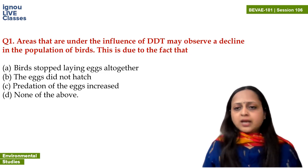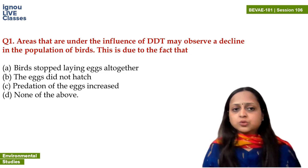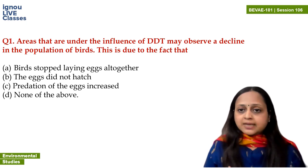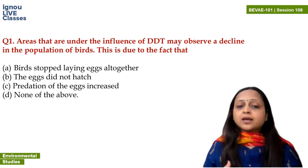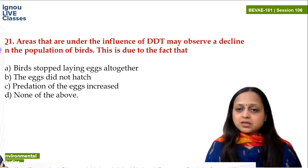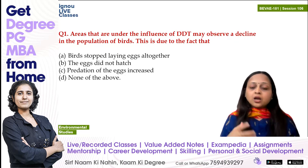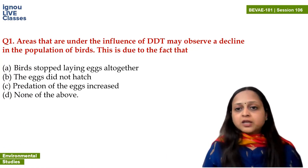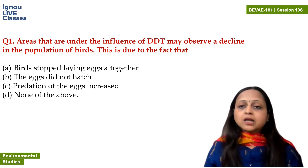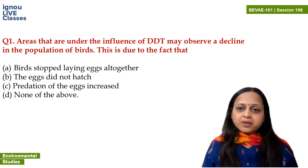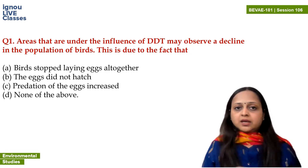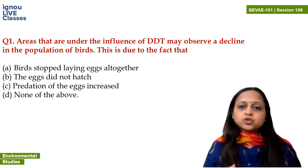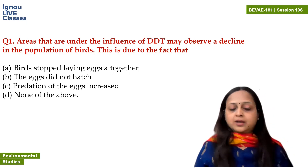The eggs do not hatch — this is the effect of DDT on birds. The option stating that predation of eggs is increased is not true. DDT is toxic not just because it is an insecticide but because it is not metabolized — it has bioaccumulation and biomagnification capability. If a female has exposure to DDT, it can affect the newborn through the placenta. So, the answer is B: the eggs do not hatch.